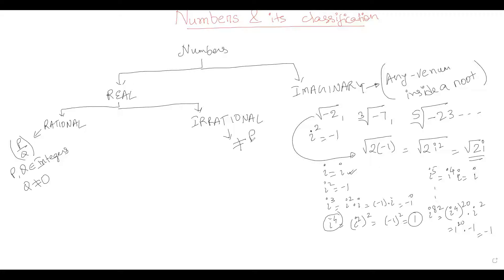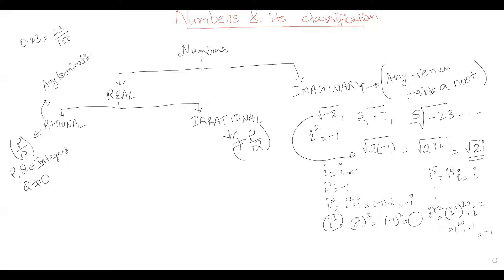For example, is 0.23 a rational or irrational number? Since 0.23 can be written as 23 upon 100, it can be expressed in p by q form, so it is a rational number. We can say that any terminating decimal can also be termed a rational number.